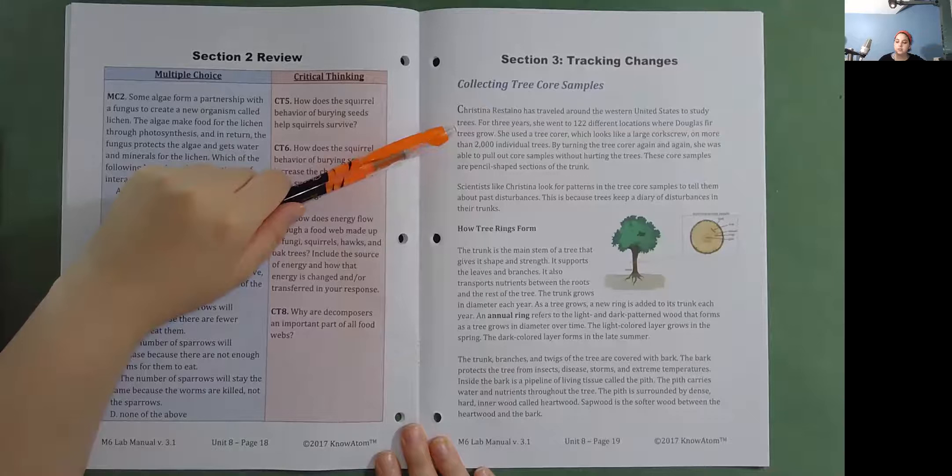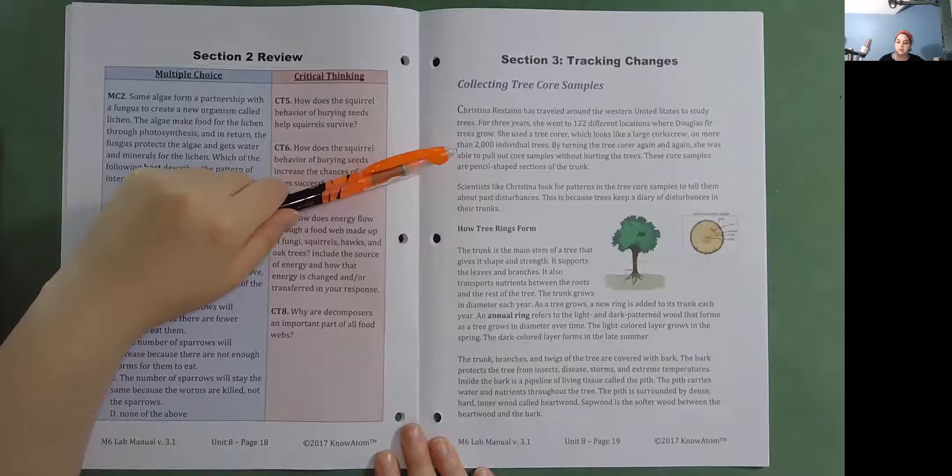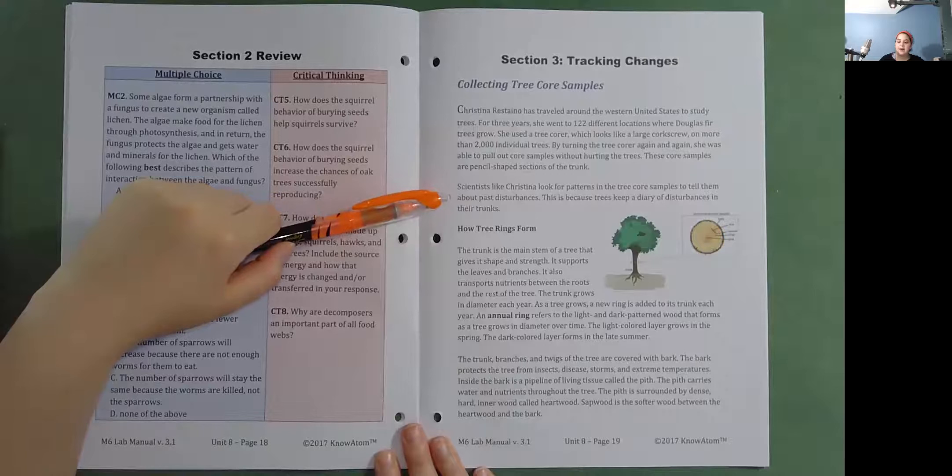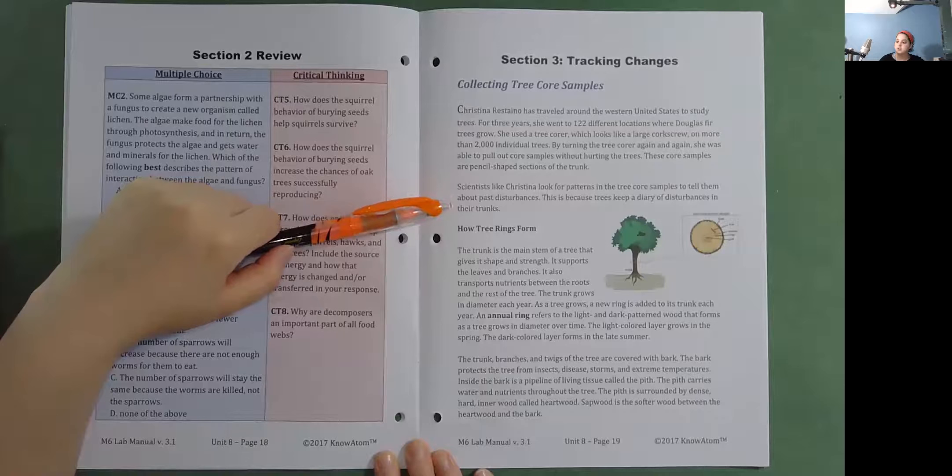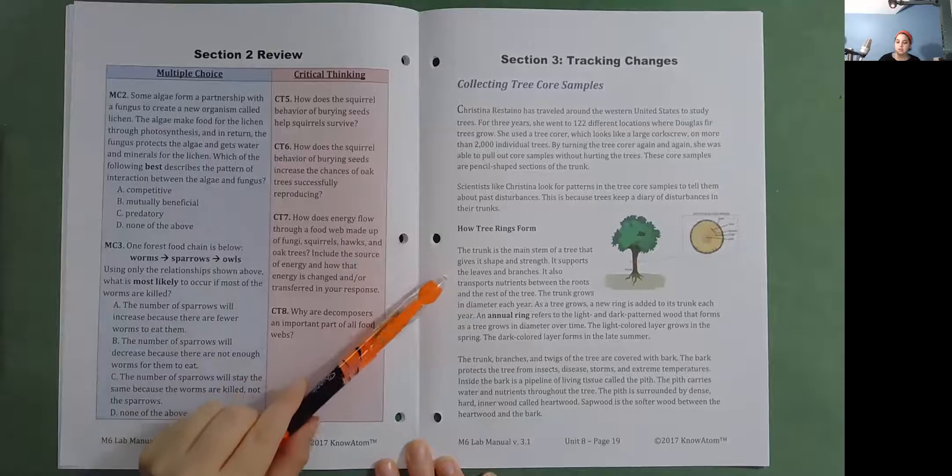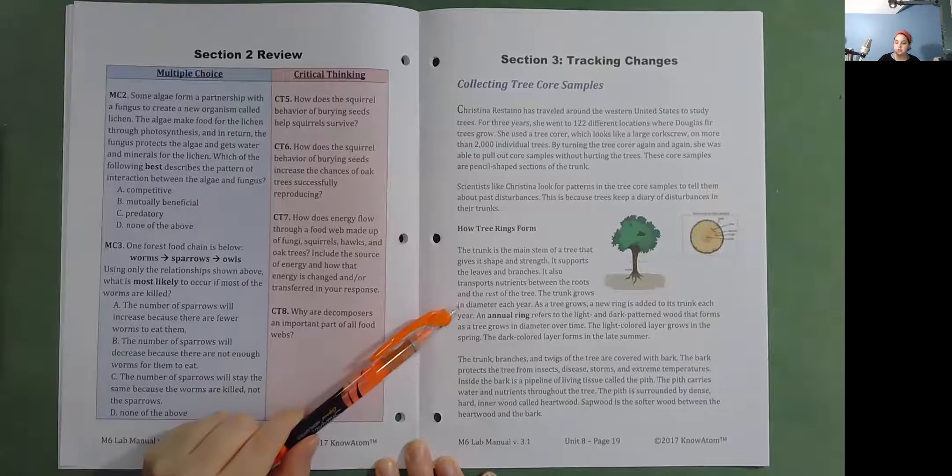Ferns and grasshoppers - which looks like a large corkscrew - on more than 2,000 individual trees. By turning the tree core again and again, she was able to pull out core samples without hurting the trees. These core samples are pencil-shaped sections of the trunk. Scientists like Christina look for patterns in the tree core samples to tell them about past disturbances. This is because trees keep a diary of disturbances in their trunks. How tree rings form. The trunk is the main stem of a tree that gives its shape and strength. It supports the leaves and branches. It also transports nutrients between the roots and the rest of the tree. The trunk grows in diameter each year. As the tree grows, a new ring is added to its trunk each year.